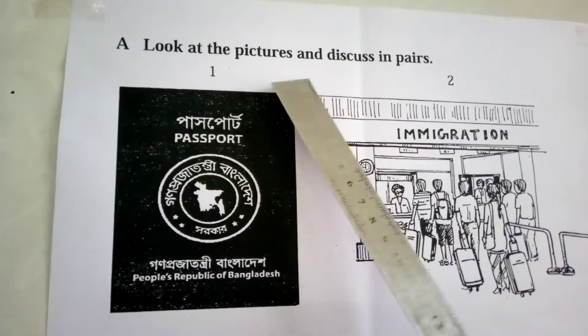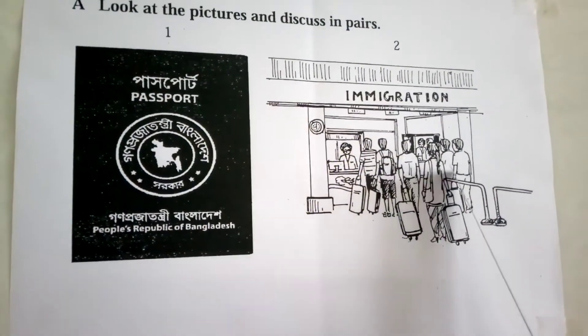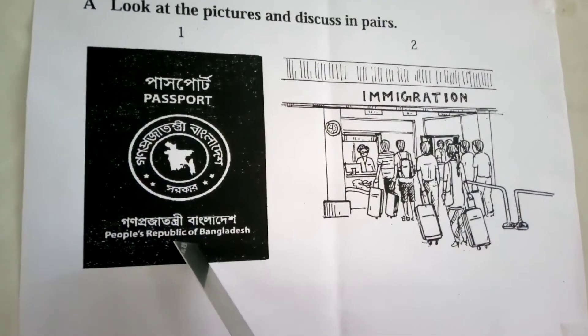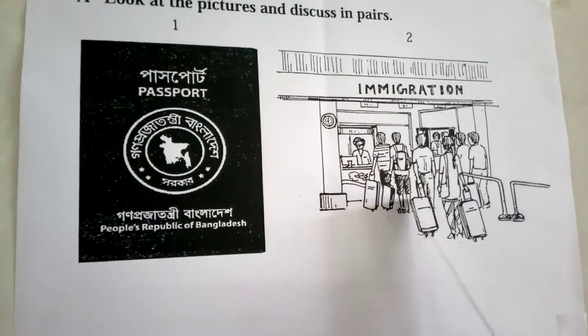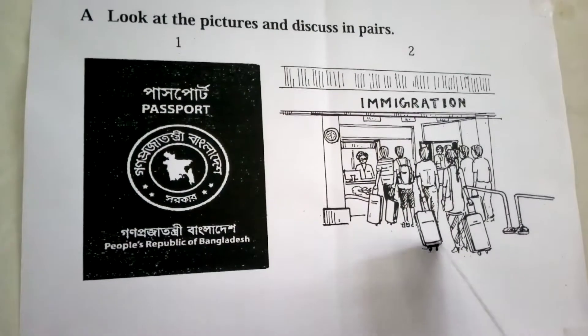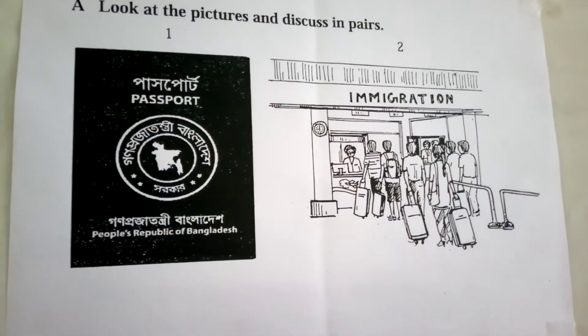Now look at the pictures and discuss in pairs. What can you see in this picture? First picture: number one, passport; and number two, immigration office. You know that this is the most important document to go abroad, and you must need this. The immigration officer will check your passport. Though you are not present in my class, I want to help you — discuss in pairs and solve this.